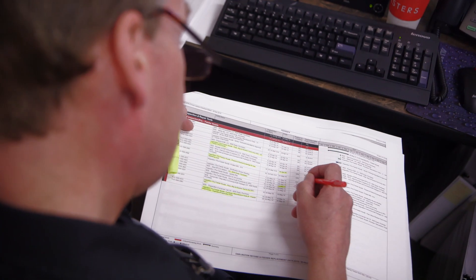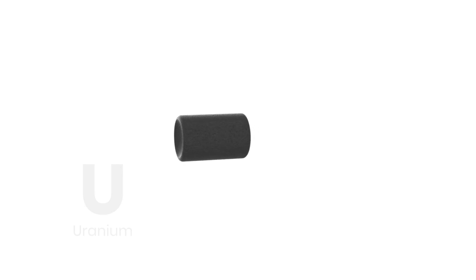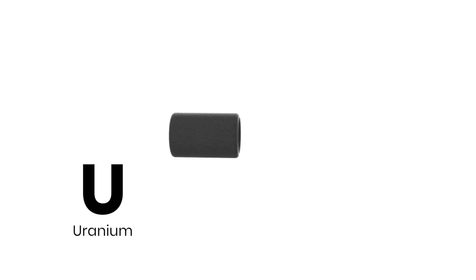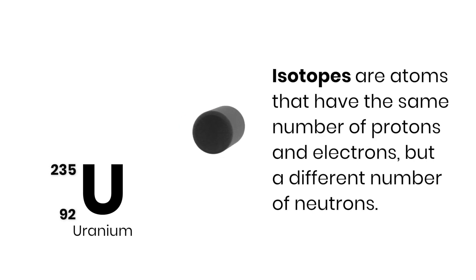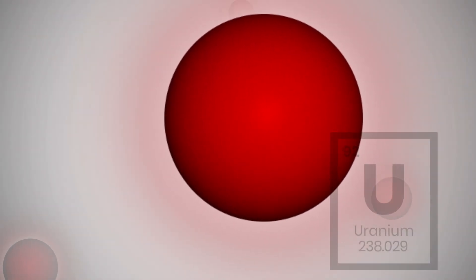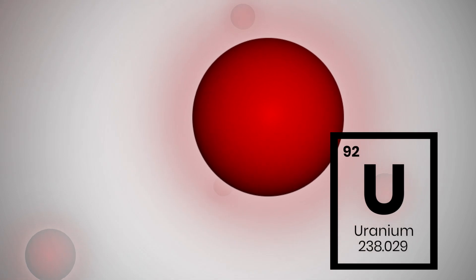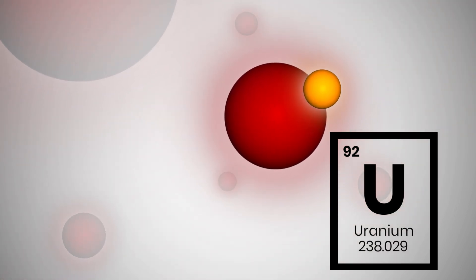When it's fresh, the fuel starts out containing only uranium-235 as the fissile isotope. It also contains mostly uranium-238, which is a non-fissile isotope.